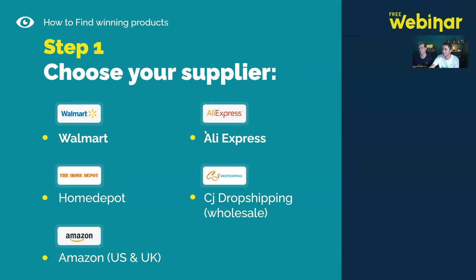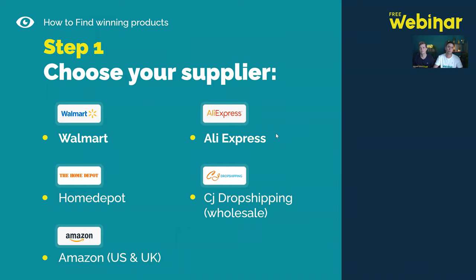Step one: choose your supplier. The options are Walmart, AliExpress, Home Depot, CJ Drop Shipping, and Amazon. Walmart is one of the most beginner-friendly; it's also easy for international sellers, has very good service, and offers high-ticket items. For free shipping on Walmart you should look for products priced at $35 and above. AliExpress is also very recommended — you get approximately 30% profit margins, a huge variety of products, and international shipping, with the option to use US warehouses, though it's a little more challenging.